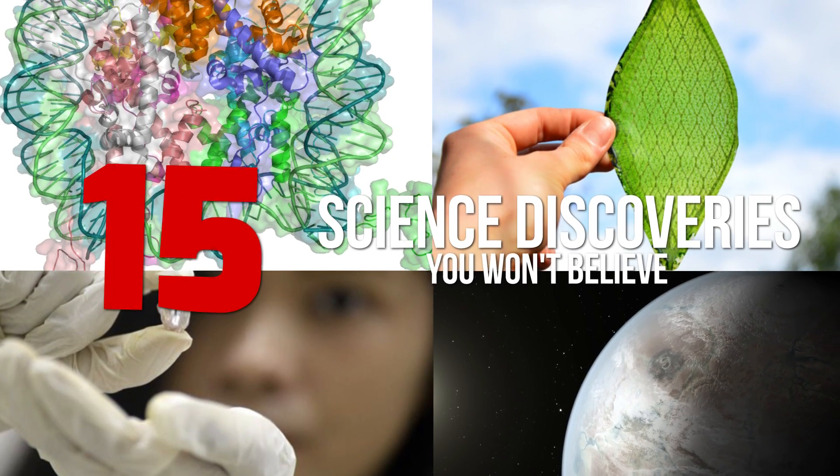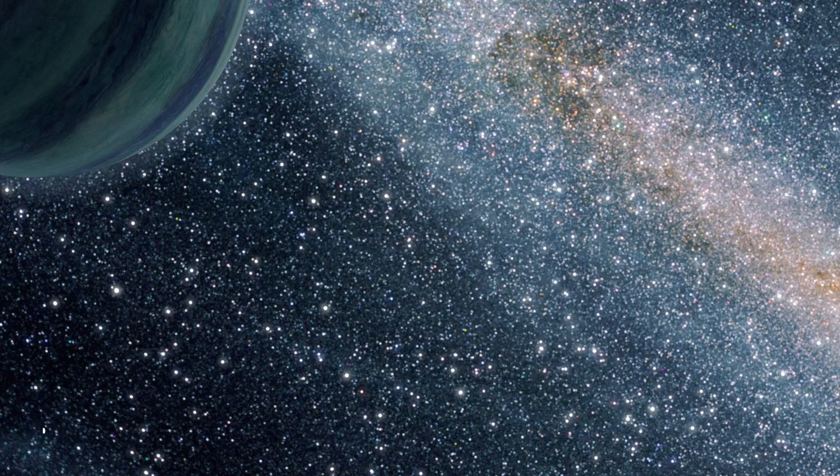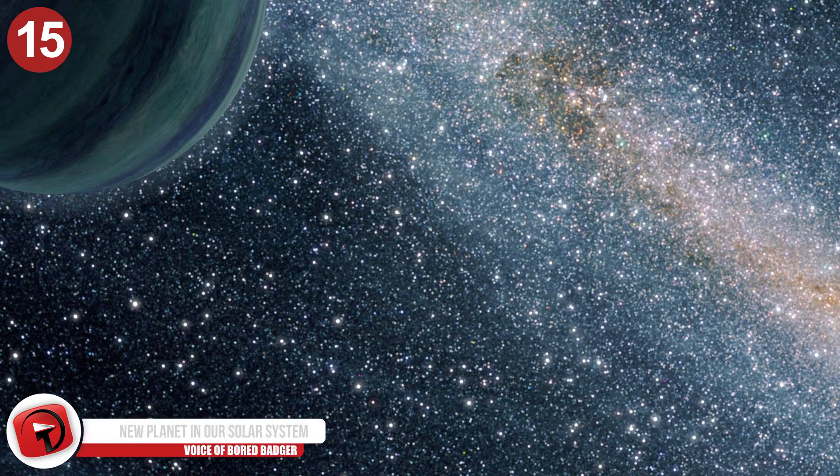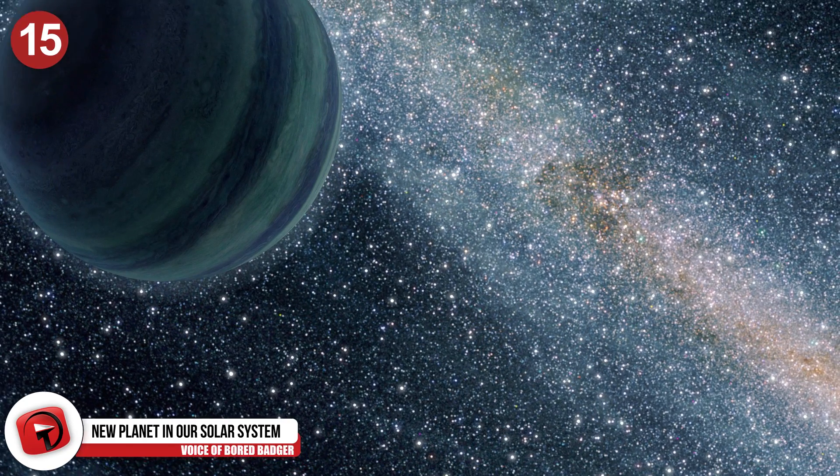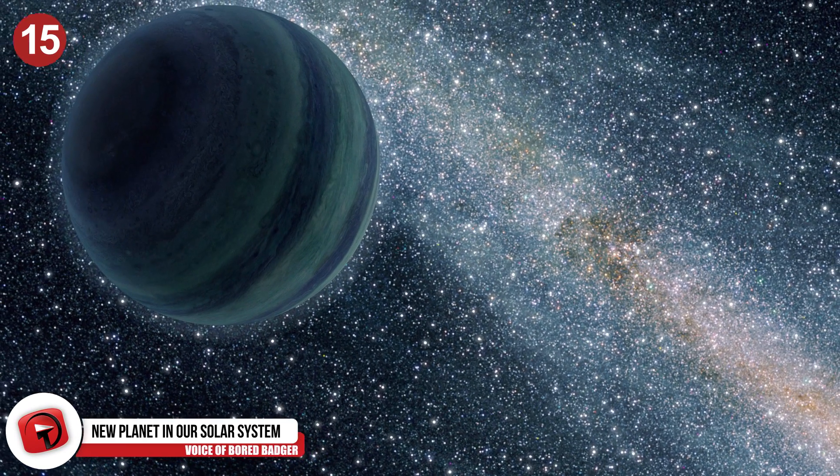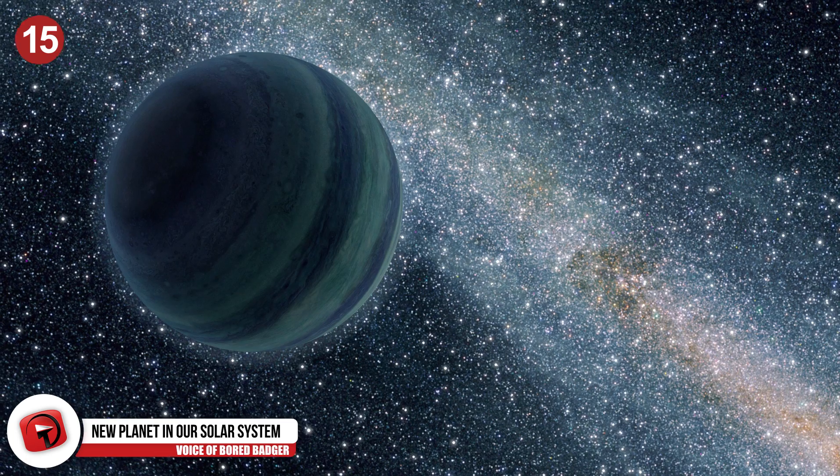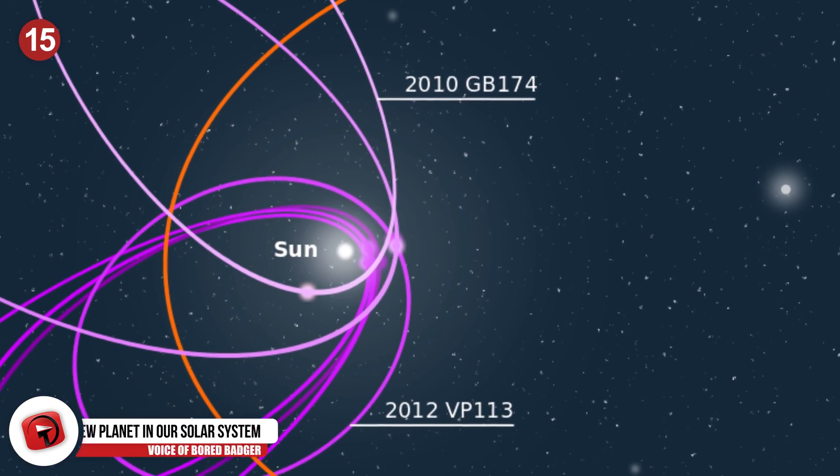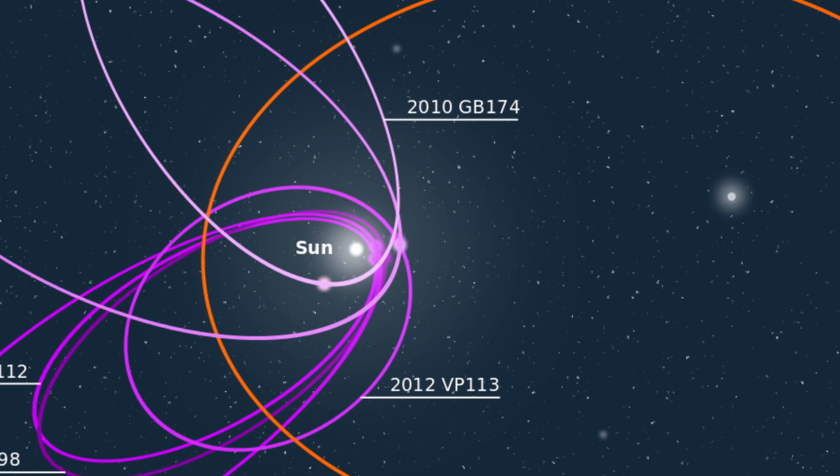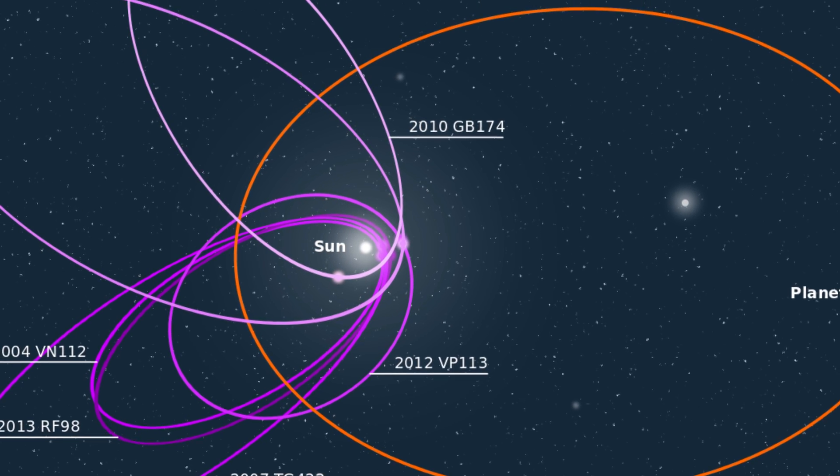15 Recent Science Discoveries You Won't Believe! Number 15: Another Planet In Our Solar System! In September 2015, a group of international scientists discovered what appears to be a new dwarf planet orbiting the sun at the edge of our solar system. The scientists named the planet RR245, and it is approximately twice as far as Neptune is from the sun.